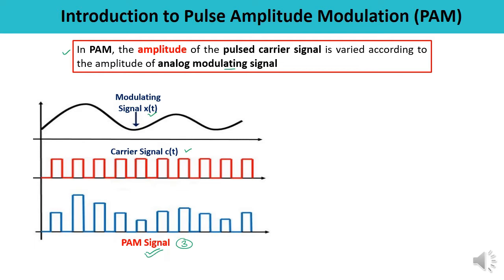In pulse amplitude modulation, you can observe that the amplitude of pulses is different at each point — here the amplitude is different, here it is different, here it is different. So the amplitude of the pulse varies according to the amplitude of the modulating signal. Here you can see the amplitude is less in comparison to this point, and accordingly you can plot it.